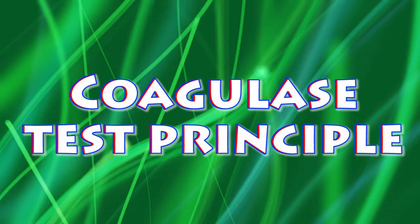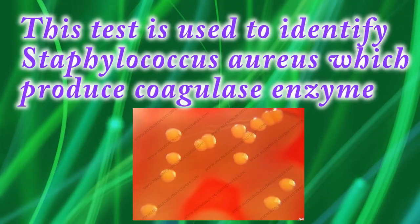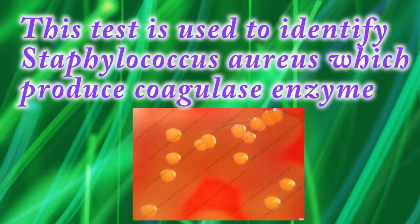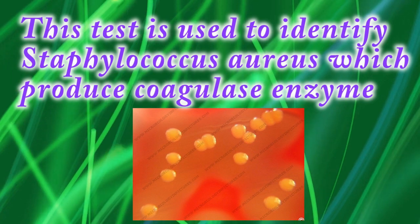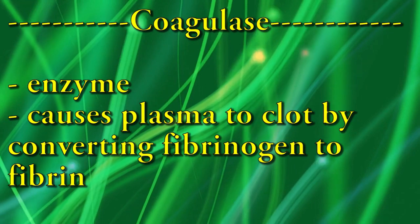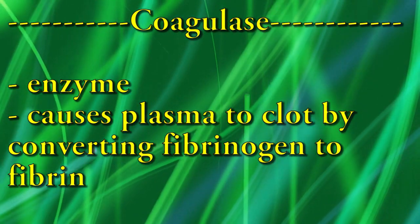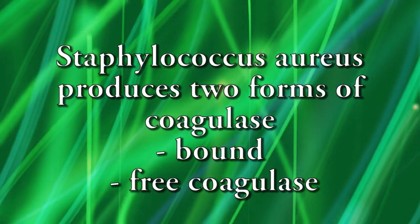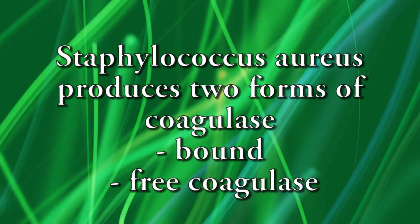This video is about the coagulase test principle. This test is used to identify Staphylococcus aureus, which produces the coagulase enzyme. Coagulase is an enzyme-like protein that causes plasma to clot by converting fibrinogen to fibrin. Staphylococcus aureus produces two forms of coagulase.